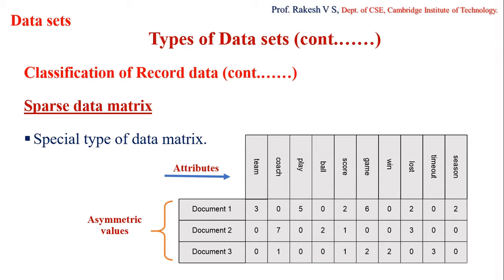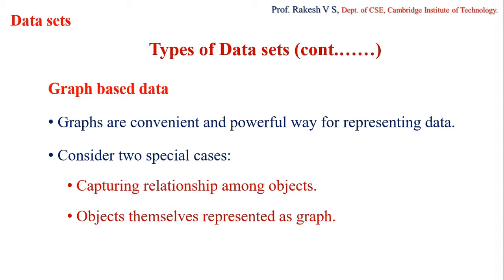The next type of dataset is graph-based data. The best way of representing concepts is through visualization, and in data mining, graphs are a convenient and powerful representation. We consider two specific cases: first, a graph that captures relationships among objects; and second, data objects that are themselves represented as a graph.